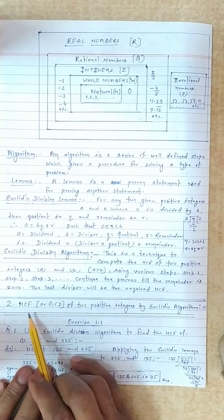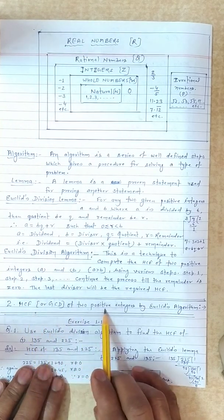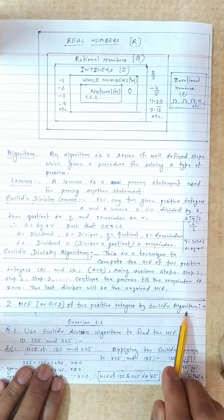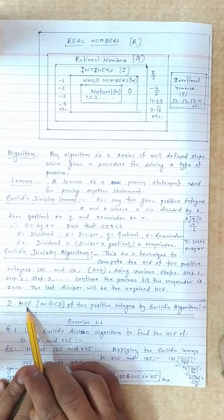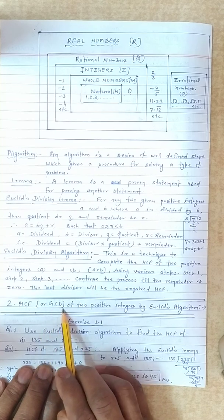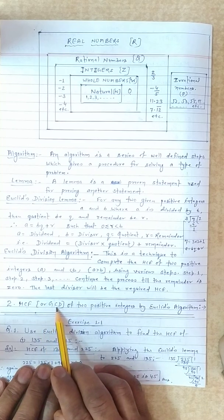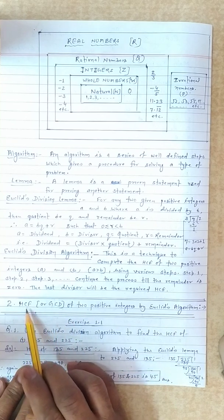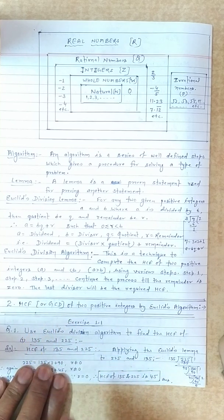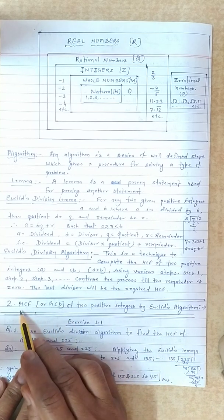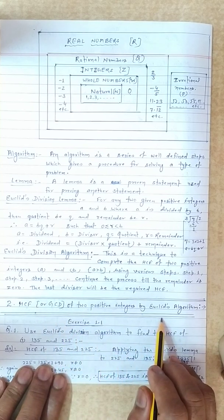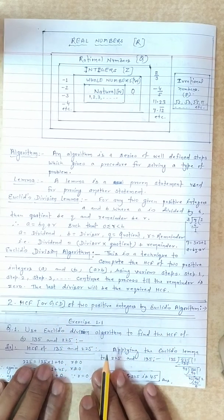Point number 2: HCF of two positive integers by Euclid's algorithm. HCF means Highest Common Factor. HCF can also be called GCD — Greatest Common Divisor. Highest Common Factor and Greatest Common Divisor are the same thing. We will use Euclid's algorithm to find the HCF.